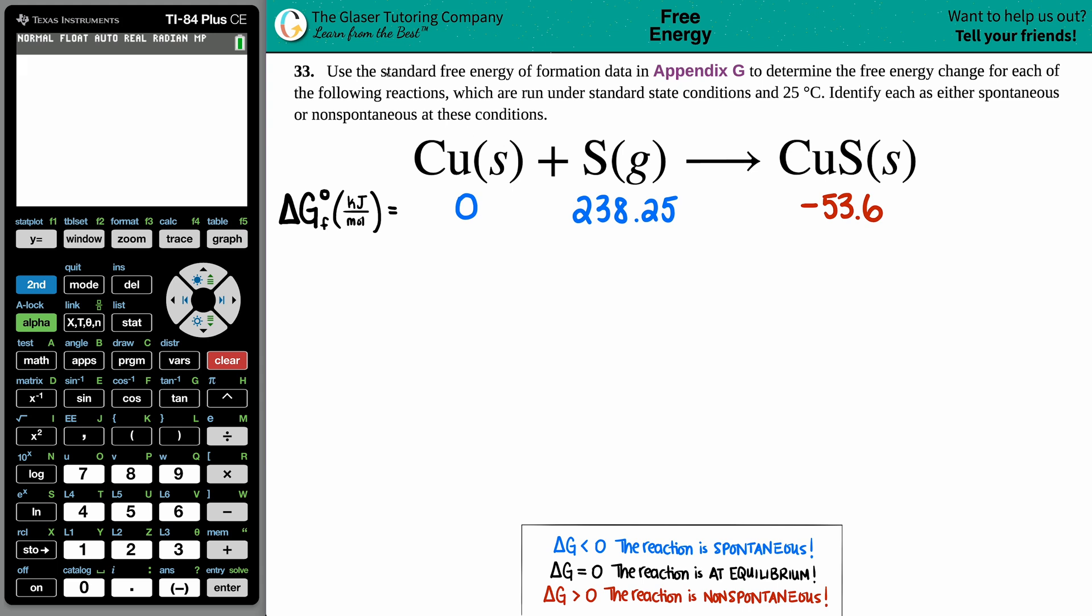Number 33: Use the standard free energy of formation data in Appendix G to determine the free energy change for each of the following reactions, which are run under standard state conditions at 25 degrees Celsius. Identify each as either spontaneous or non-spontaneous at these conditions.